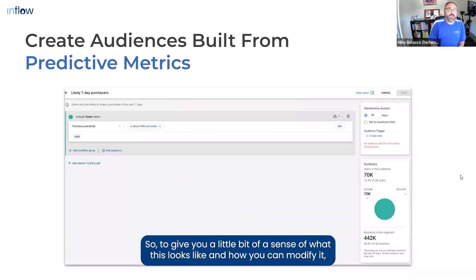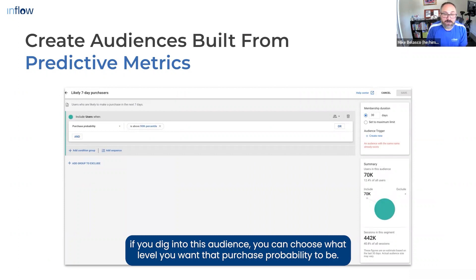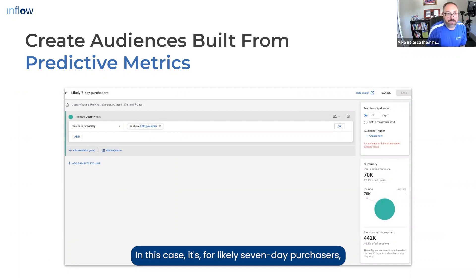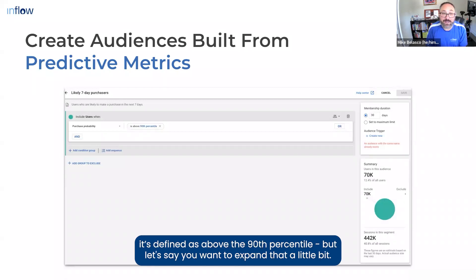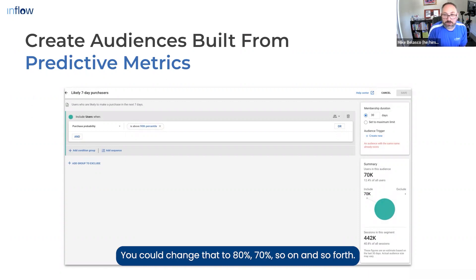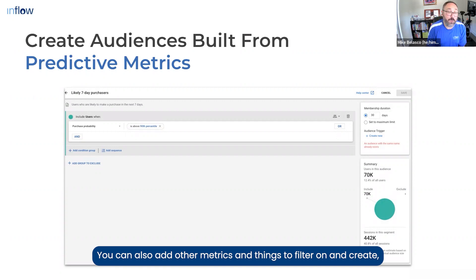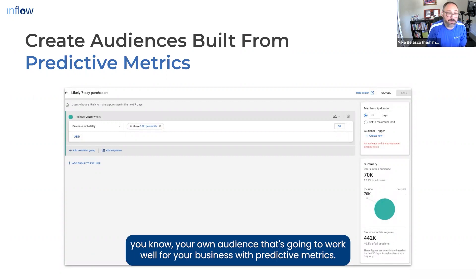To give you a sense of what this looks like and how you can modify it: if you dig into this audience, you can choose what level you want that purchase probability to be. In this case, for likely seven-day purchasers, it's defined as above the 90th percentile — but let's say you wanted to expand that a little bit. You could change that to 80%, 70%, and so on. You can also add other metrics and filters to create your own audience that's going to work well for your business with predictive metrics.